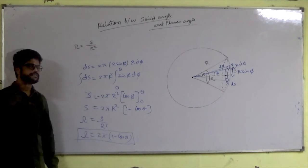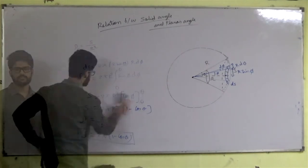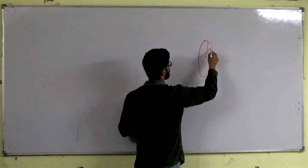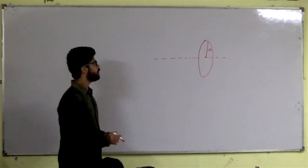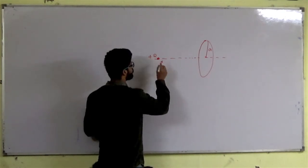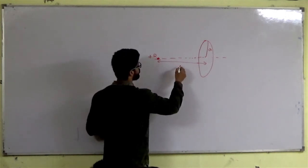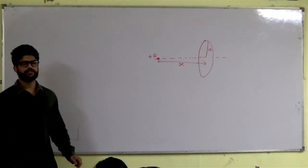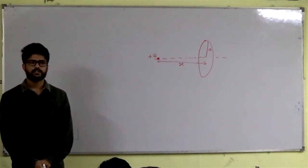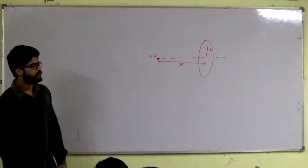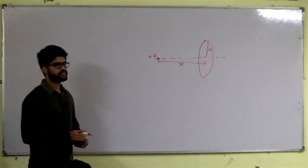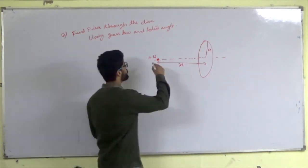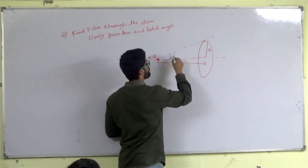Now we have a question. There is a disk of radius a, and at a distance x from the disk there is a charge of +Q. We have to find the flux through the disk. We have already set up this type of integration before. Now we will solve it using Gauss's law and solid angle.